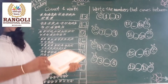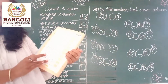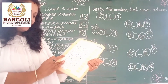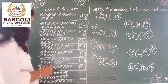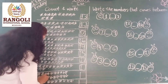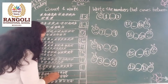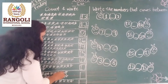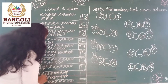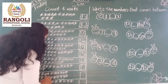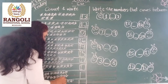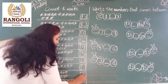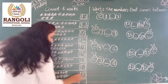Then second one, last second one. How many? 1, 2, 3, 4, 5, 6, 7, 8, 9, 10, 11, 12, 13, 14, 15, 16, 17, 18, 19, 20. So, right here write 20.